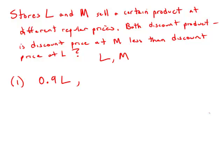That's the discounted price at store L. And at store M, the discounted price is 15% off — 15% less — so that is 85% of the regular price, or 0.85M. There we have the discounted prices, but we don't know anything about the relationship of L or M. We have no way of knowing whether L is bigger, whether M is bigger, and by how much. So this statement by itself is insufficient.